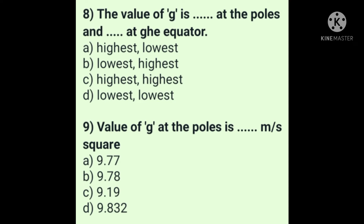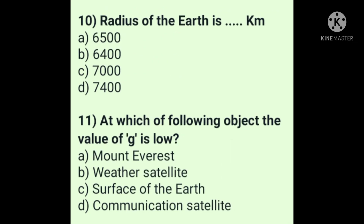Question 9: Value of g at the poles is dash meter per second square. Answer is option D: 9.832 m/s². Question 10: Radius of the earth is dash kilometer. Answer is option B: 6,400 kilometers.